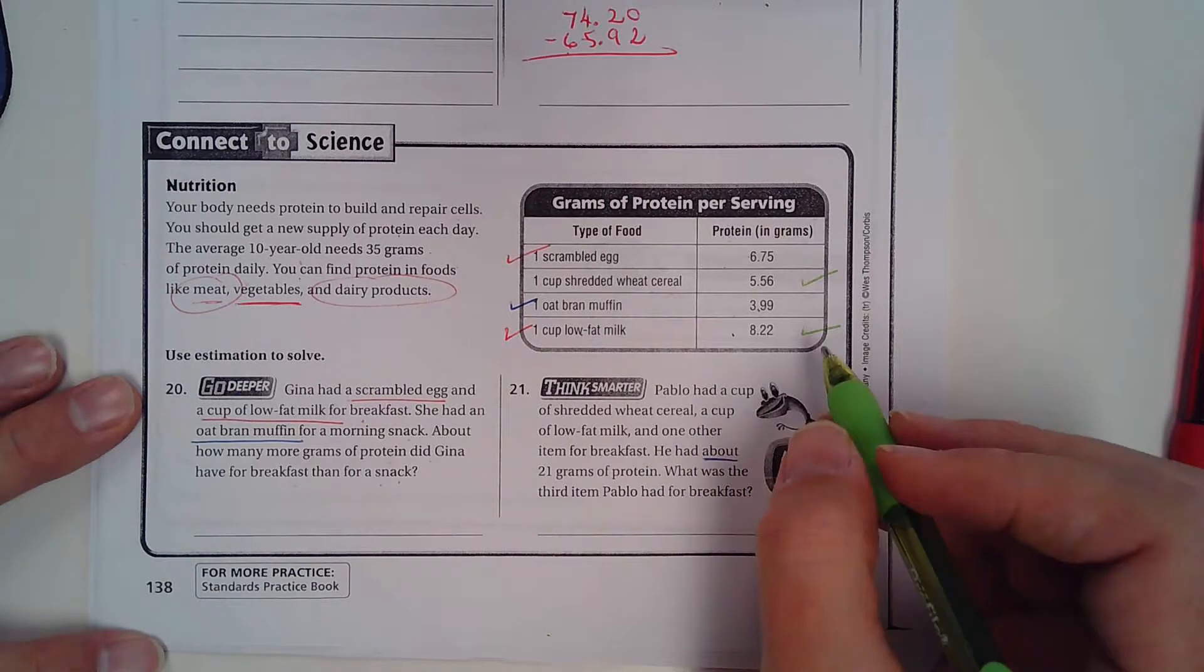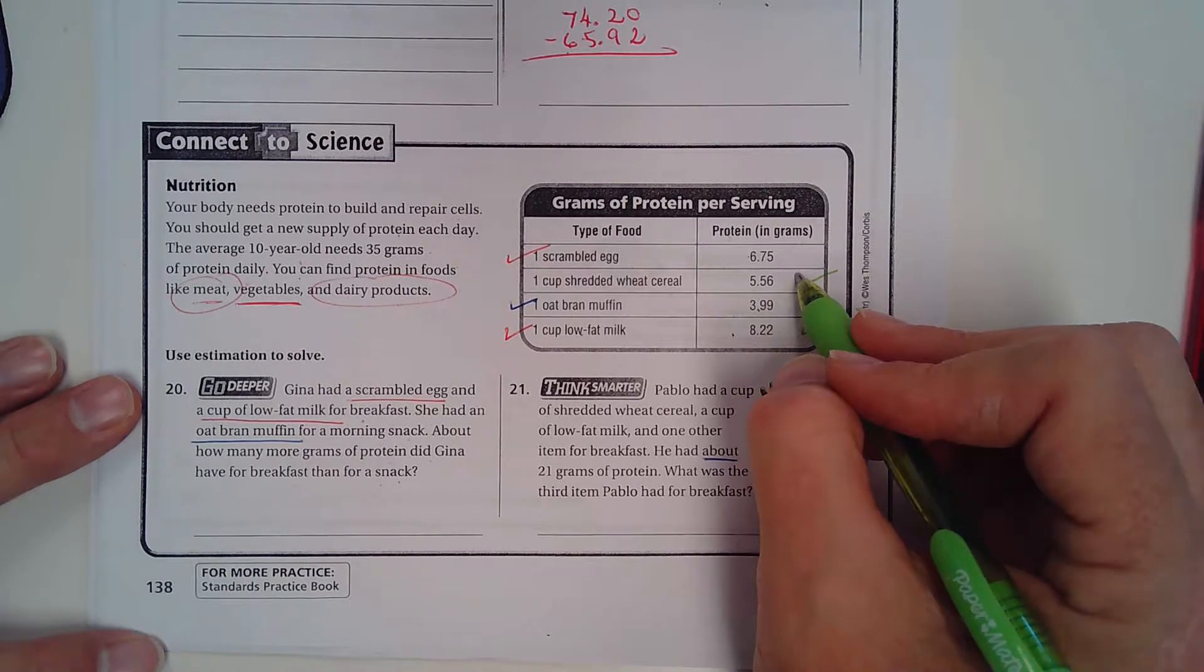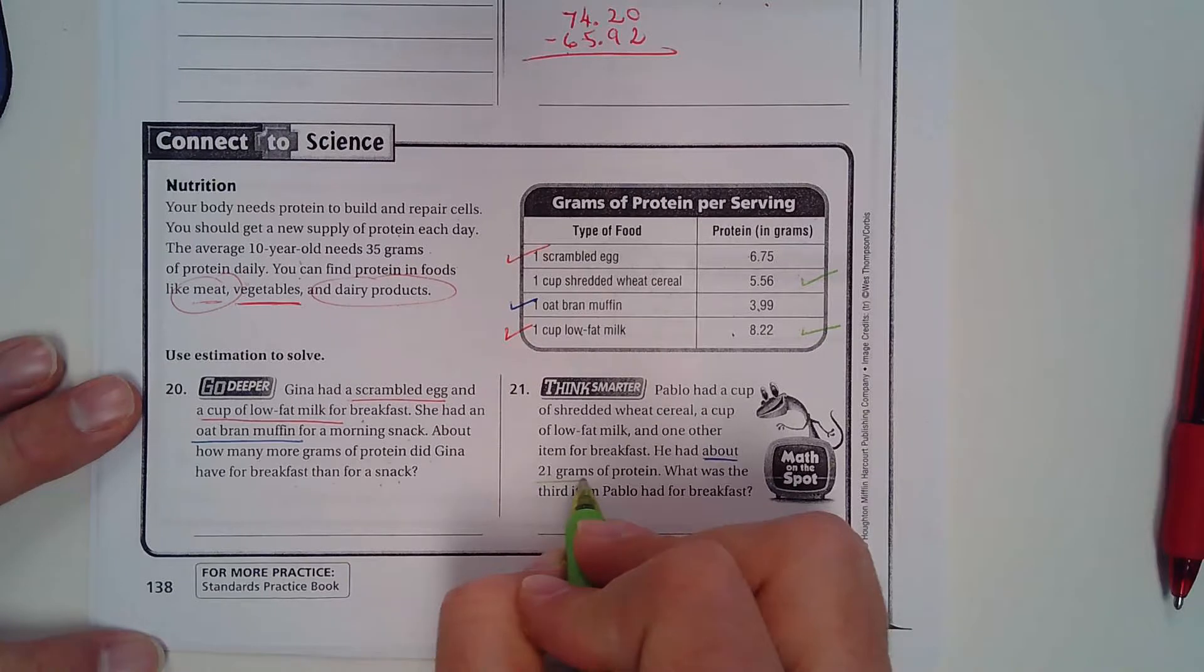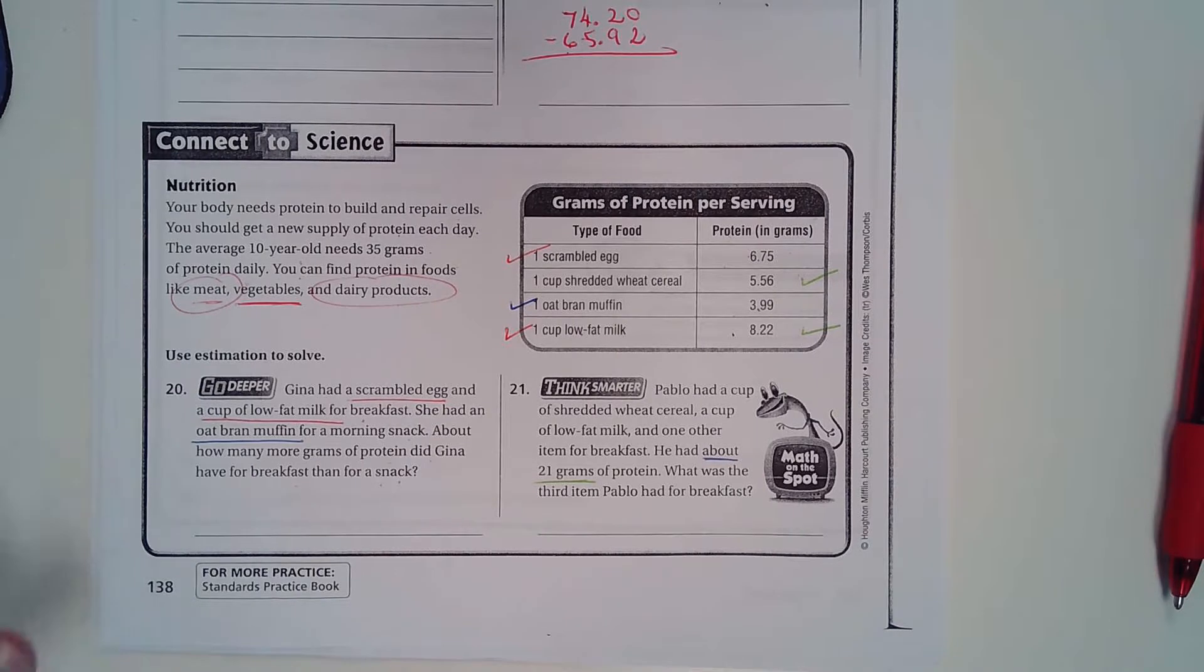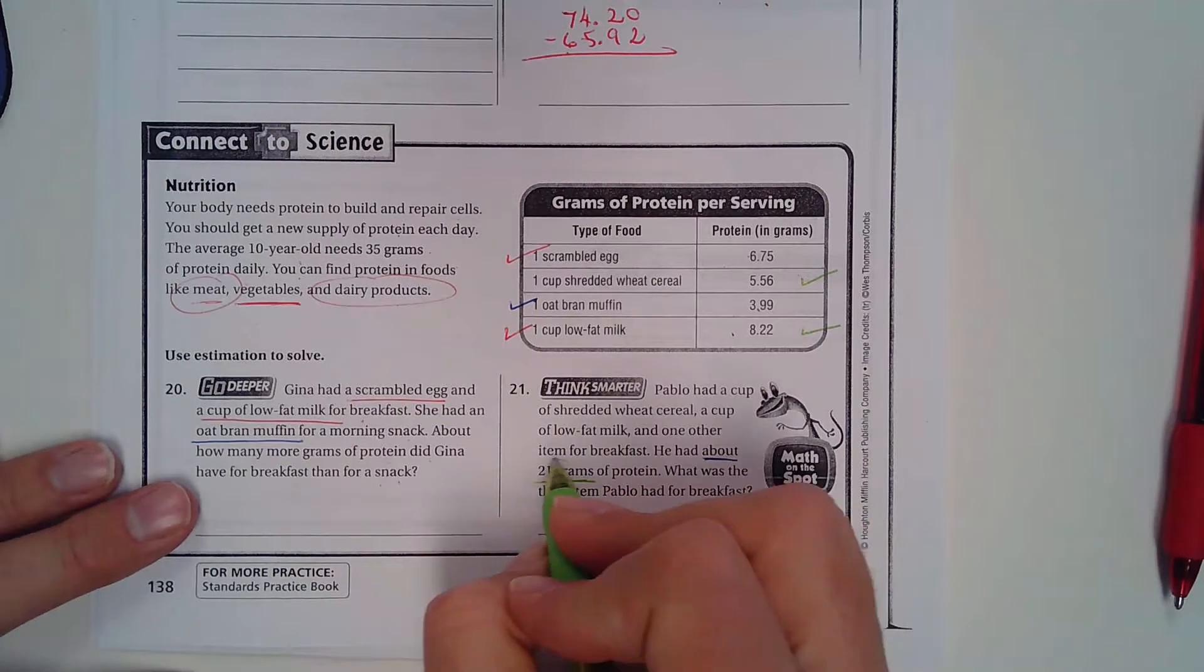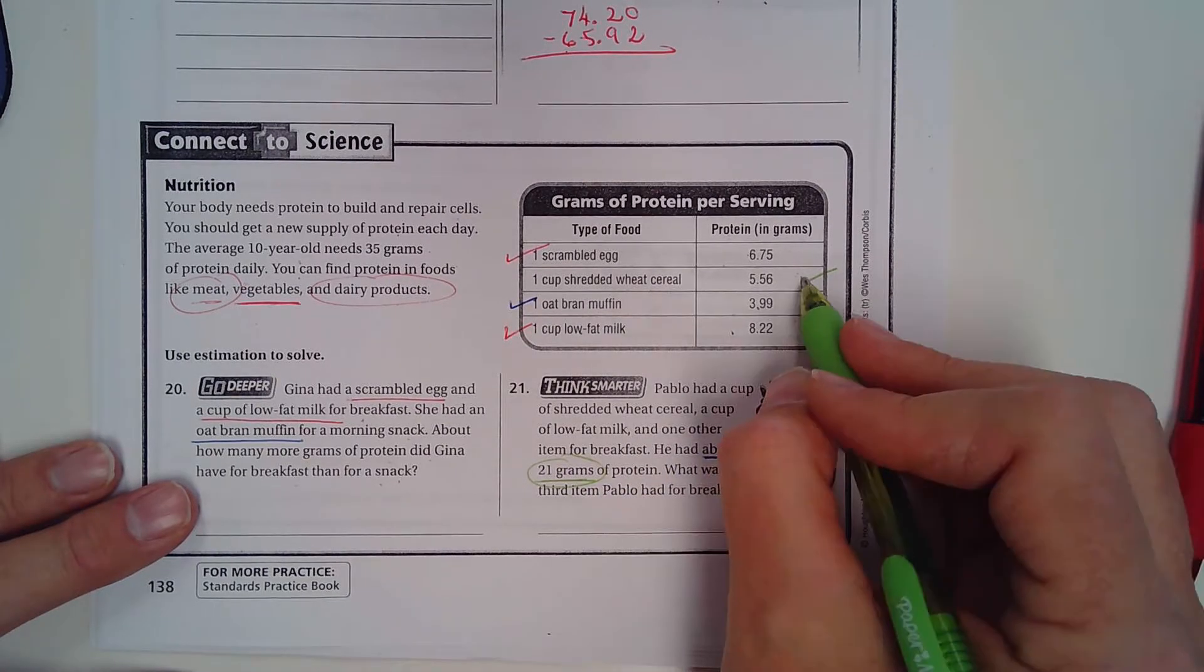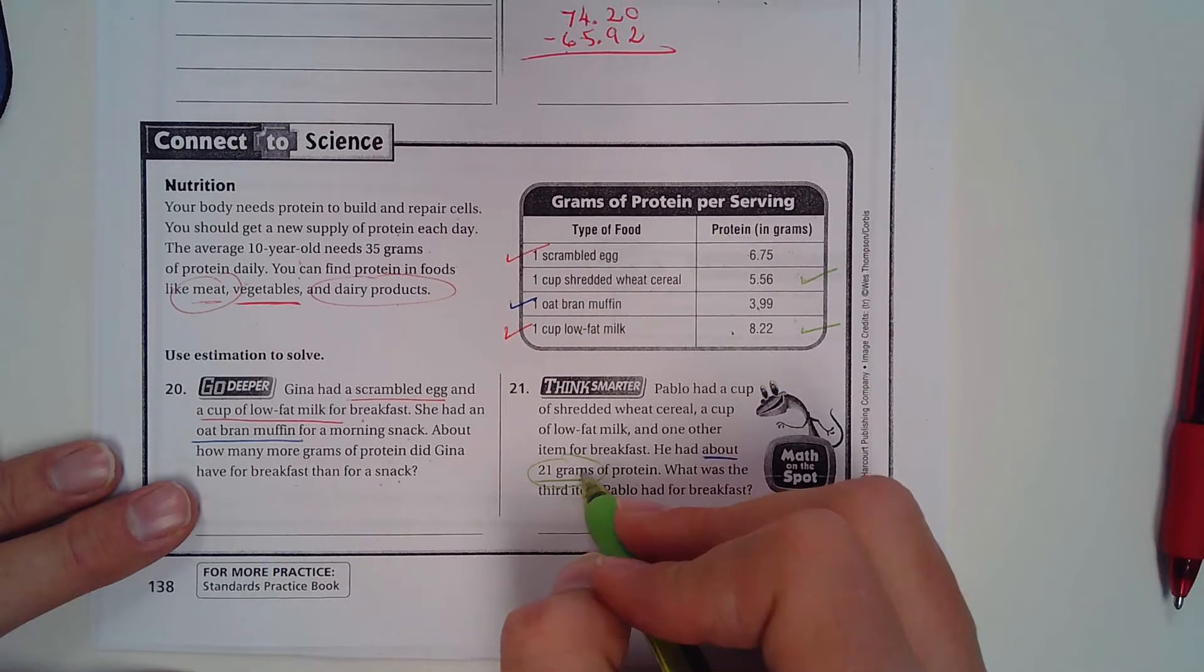So you're going to have to add these two together right here and then figure out how many more grams are needed to get to about 21 grams of protein. Does that make sense? So what was the third item he had for breakfast? Well, I think I could see what it is right now. So remember, it needs to get pretty close to 21 grams. So add up these two and then see which one of these would be needed to get to be close to 21 grams.